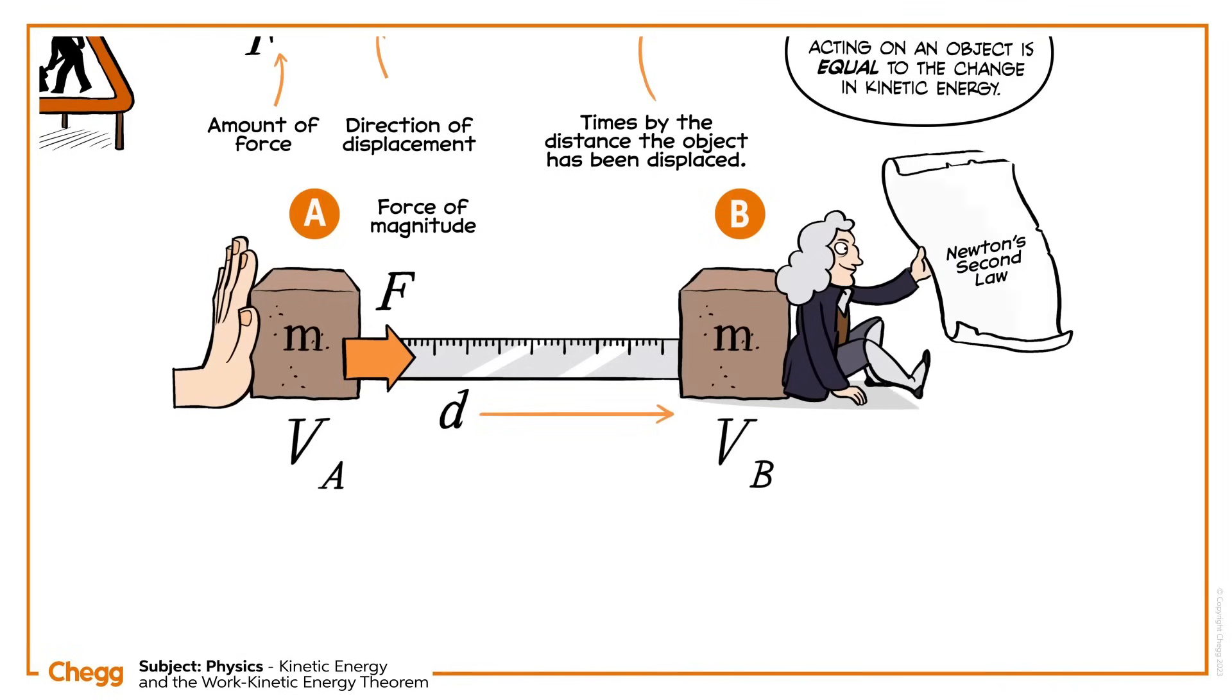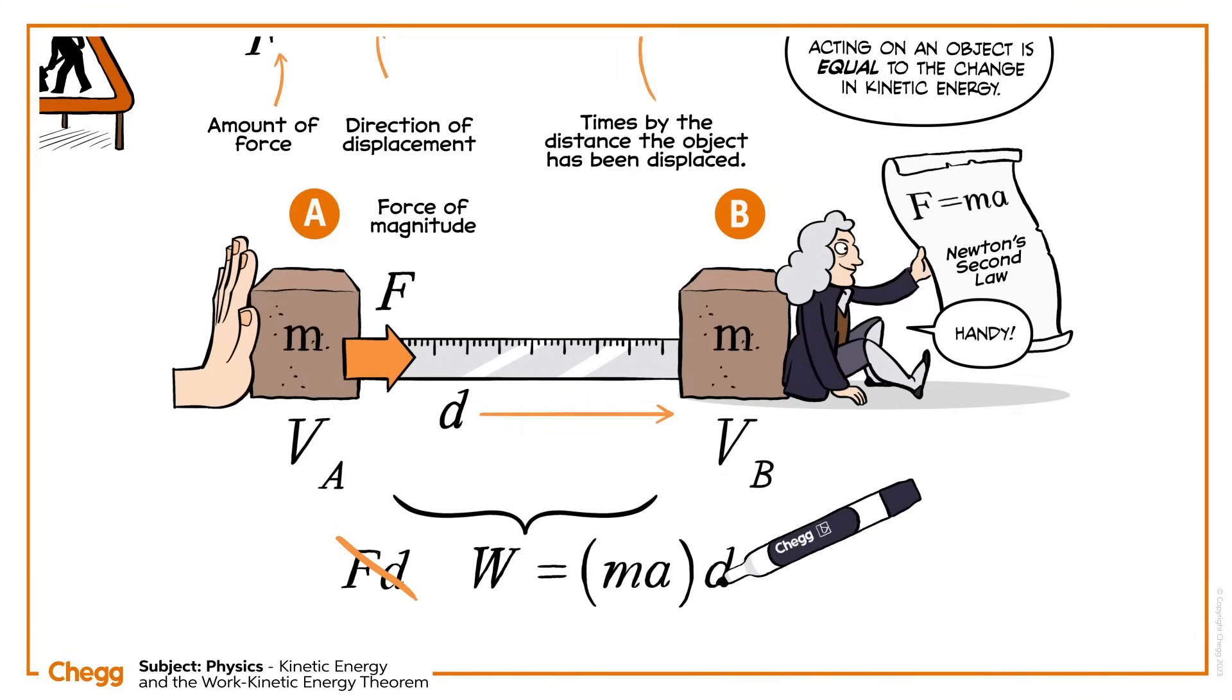Now, as is often the case, Newton's rules come in handy. Newton's second rule tells us F equals MA. Since work equals FD, replacing the F with MA, we can say that work equals M times A times D. That is, mass times acceleration times displacement.